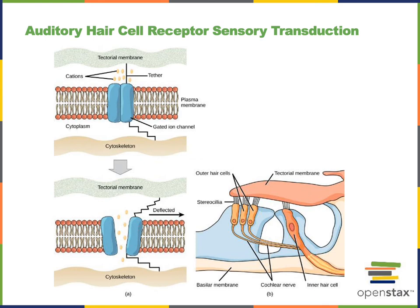Adjacent to the basilar membrane is the more rigid tectorial membrane that connects to the stereocilia of auditory hair cells. Vibration of the basilar membrane causes opening and closing of mechanically gated ion channels on the stereocilia of auditory hair cells.